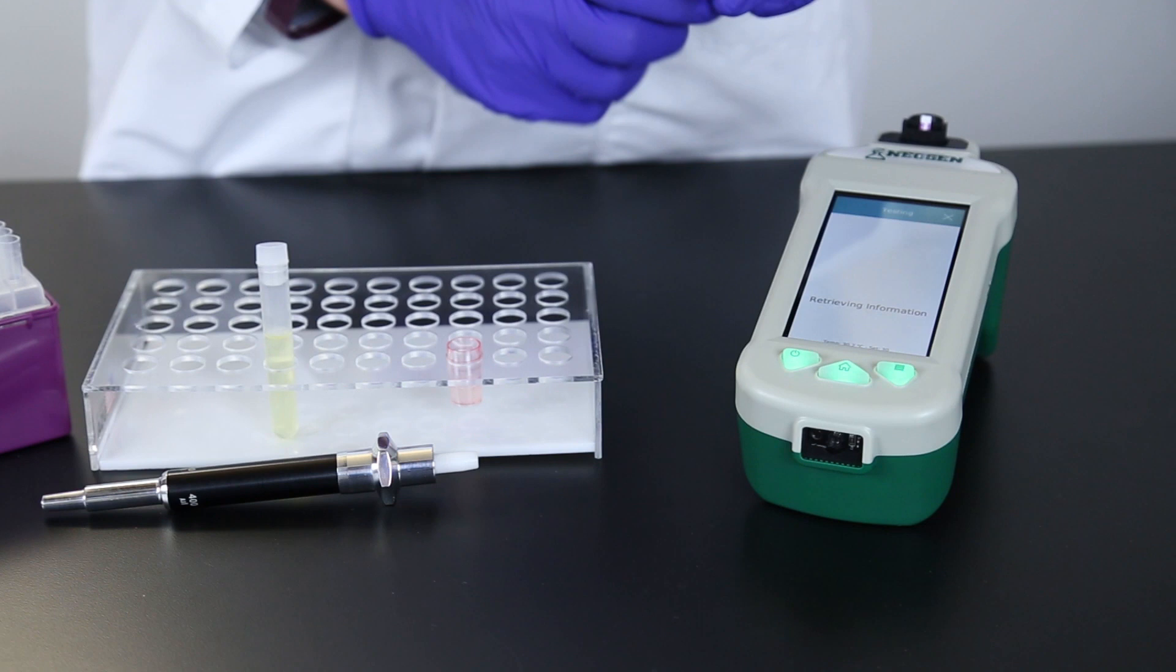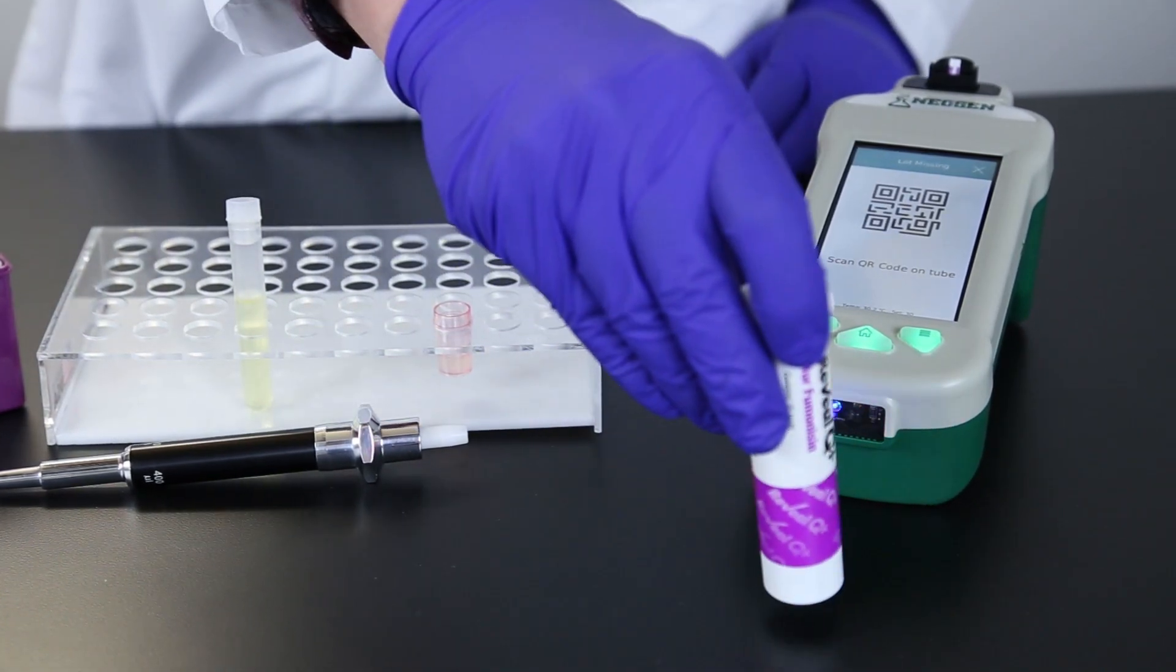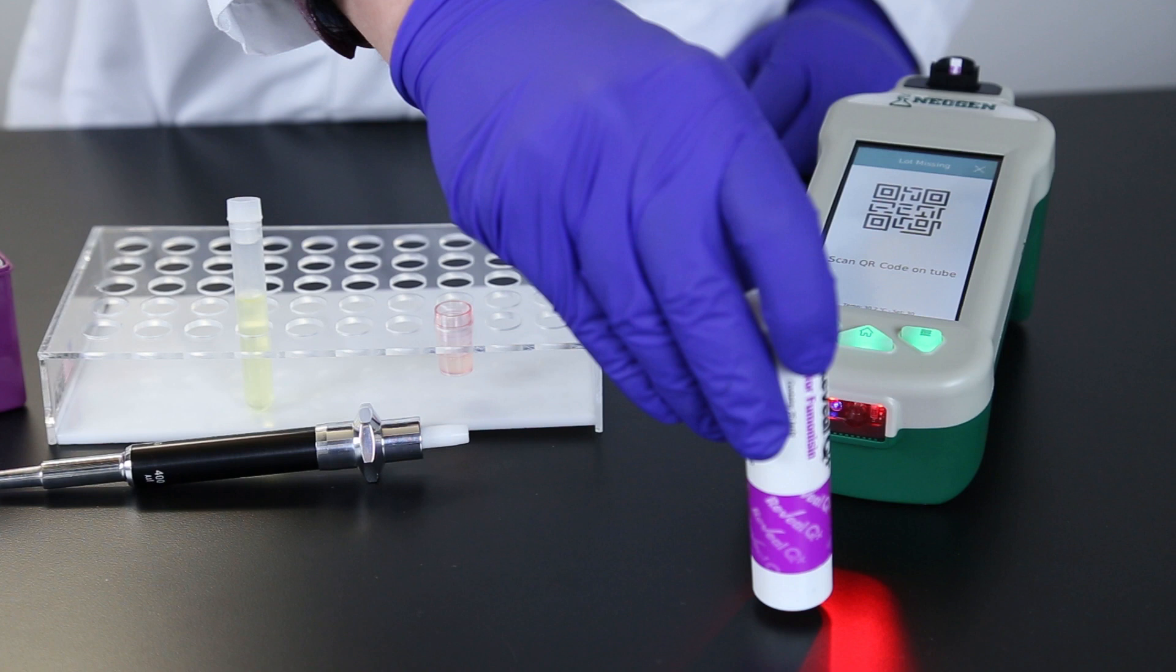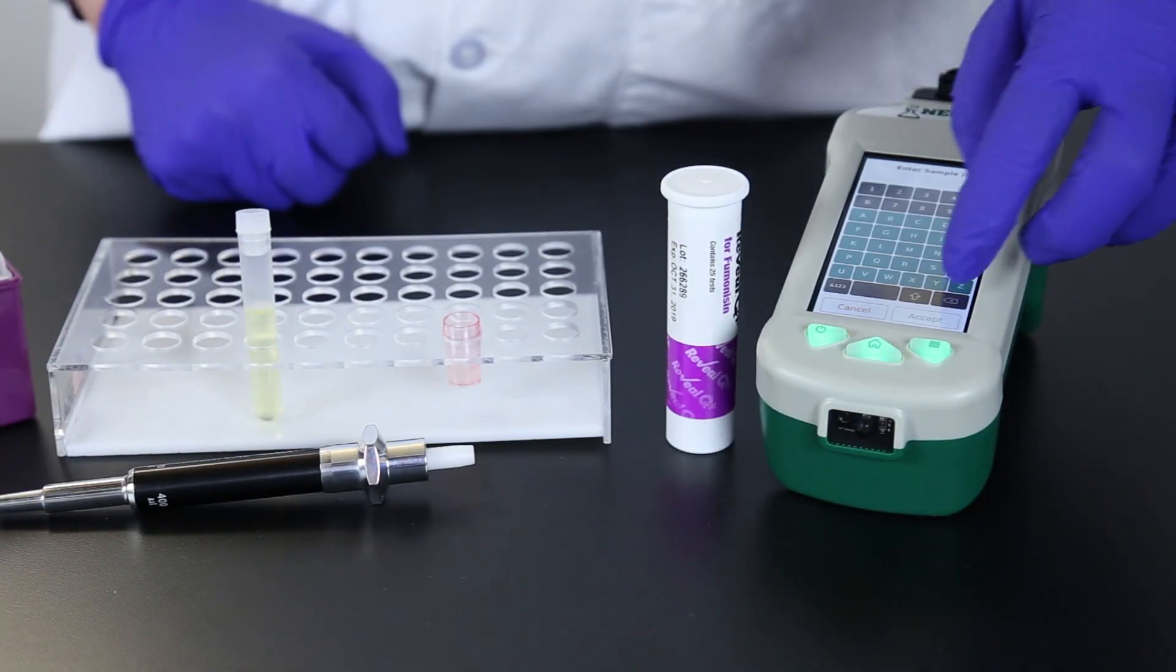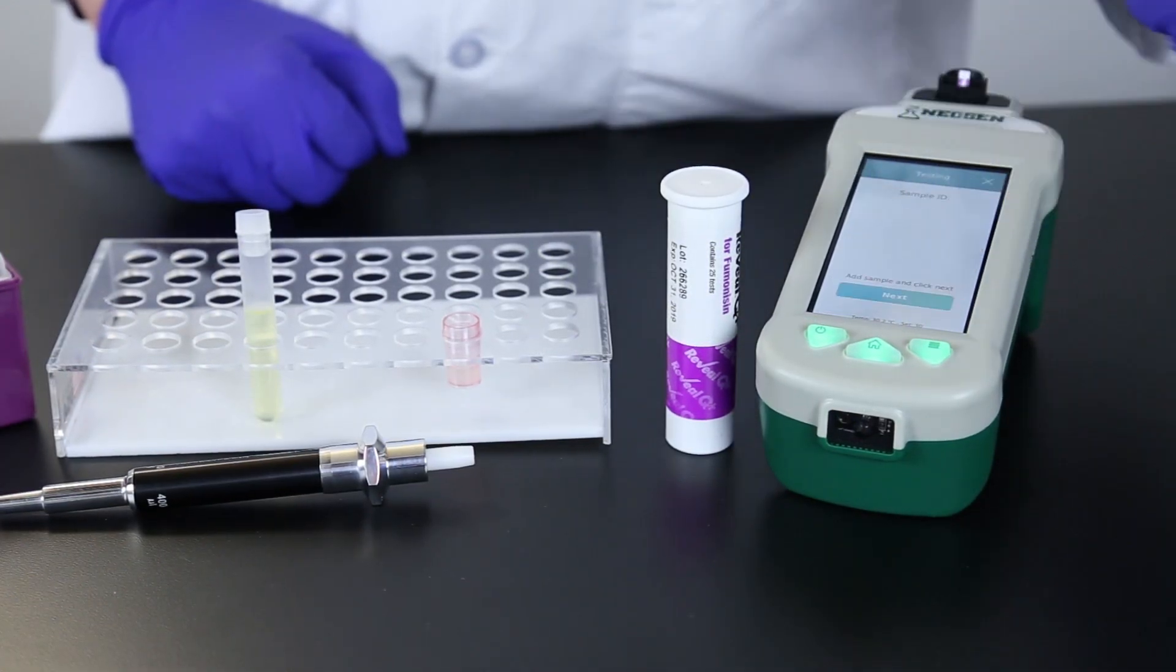If you need to add the lot information to the system, the scanner on the front of the system will turn on automatically. Scan the QR code located on the strip tube. Enter a sample ID if you like. This can be done manually or if you barcode your samples by using the scanner in front of the system.